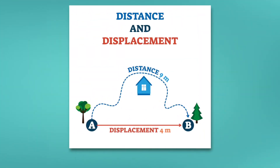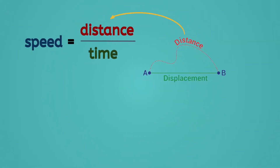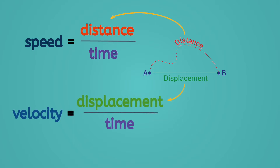Do you remember in the last lesson when we learned about the difference between distance and displacement? That difference is going to matter here. Speed is a way of measuring how much distance is covered in a given amount of time, while velocity tells us how much displacement occurred in a given amount of time. To calculate speed or velocity, we simply divide the distance or displacement by time. Notice that time is the only variable that these two measurements have in common.